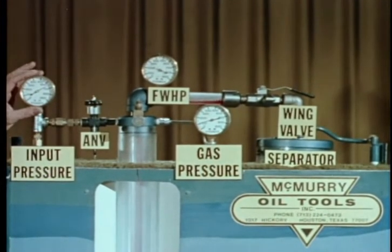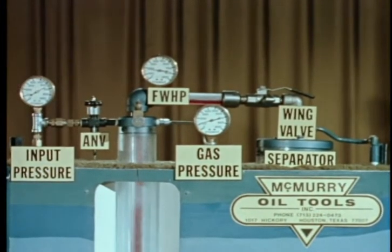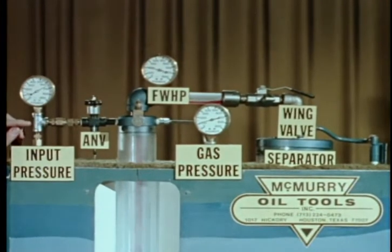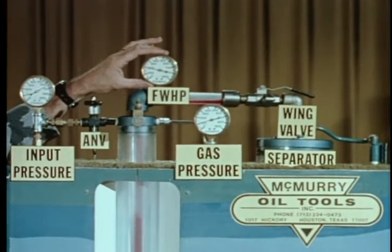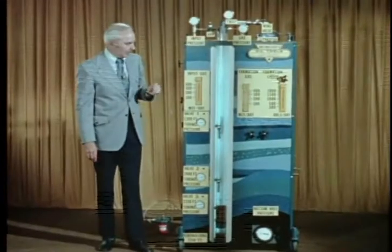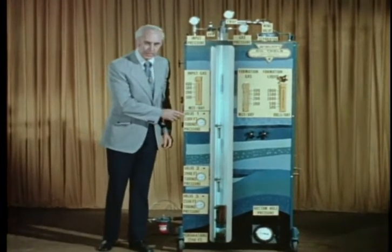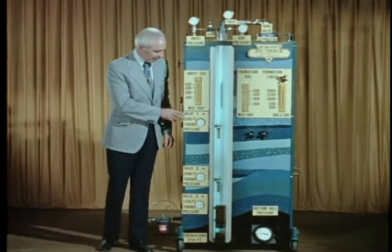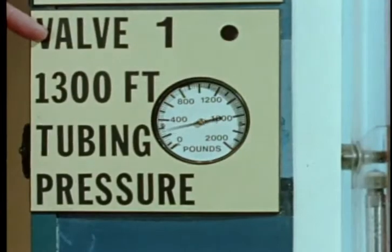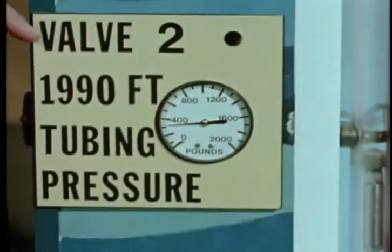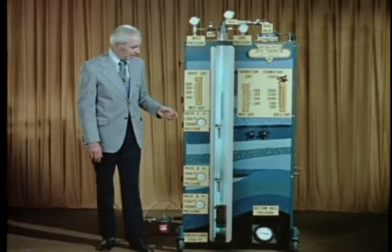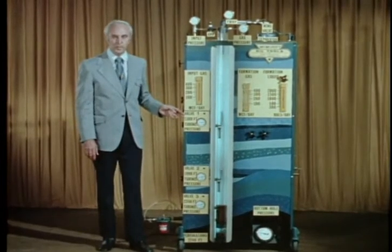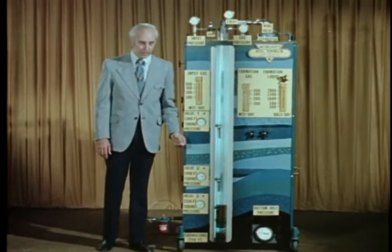This surface gauge reads input pressure and is the lift gas pressure available at the well head. This gauge reads flowing well head pressure. Below the surface we have three gas lift valves located at the simulated depths of 1,300 feet, 1,990 feet, and 2,350 feet. These valves are designated respectively as valves number one, number two, and number three.